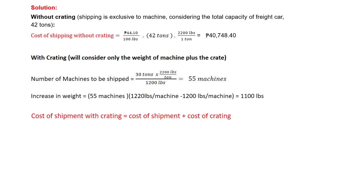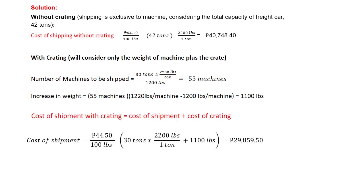The total cost of shipment with crating is equal to the cost of shipment plus the cost of crating. The cost of creating is included because it is an economic and operational cost. The shipping rate is 44 pesos and 50 cents per 100 pounds. We apply this to 30 tons converted into pounds, plus the 1,100 pounds increase in weight, giving a total cost of shipment of 29,859 pesos and 50 centavos.